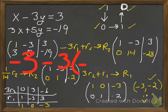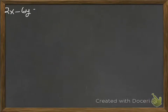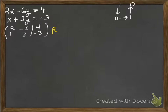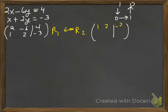We'll do one more — the other example we did in class, same procedure. This time we have 2x minus 6y equals 4 and x plus 2y equals negative 3. We'll write the augmented matrix. I notice there's already a 1 available, so I'm going to take the path of least resistance and do a row swap — switching rows 1 and 2. We'll write both in yellow since both changed.